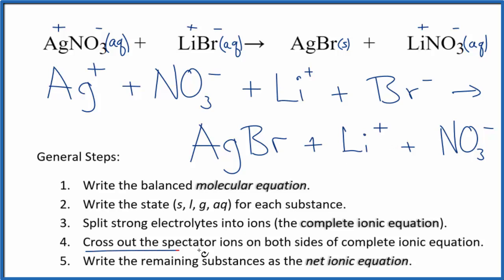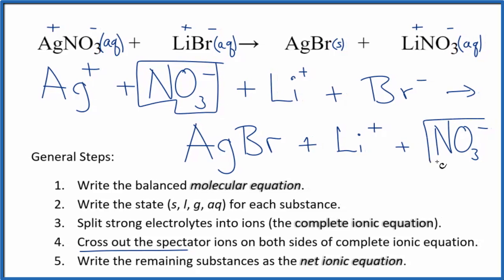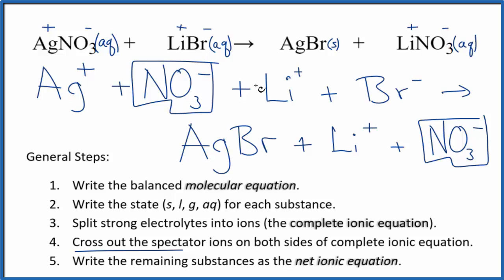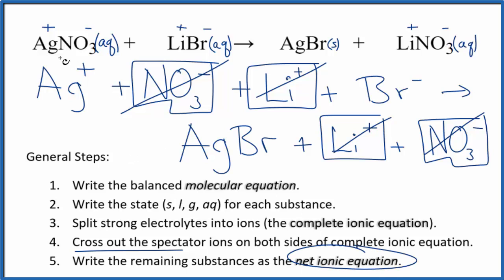At this point, we cross out the spectator ions that are on both sides of the complete ionic equation. In the reactants we have the nitrate ion, and in the products we also have a nitrate ion. These are spectator ions, so we cross those out. In the reactants we have the lithium ion, and in the products too, so we cross that out. What's left is the net ionic equation for AgNO3 plus LiBr.